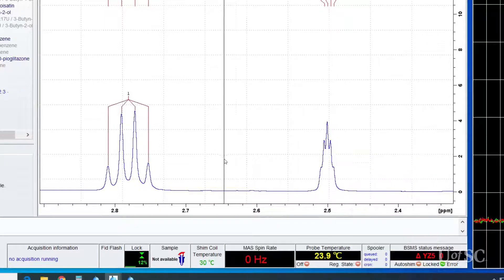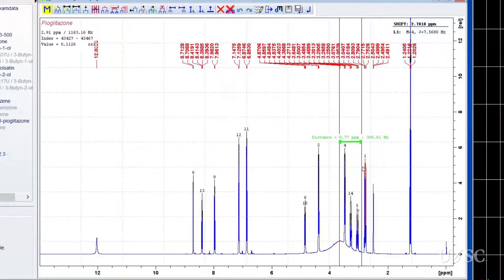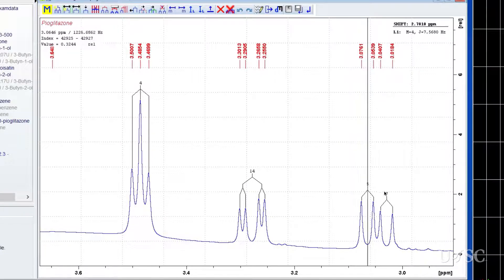The quartet at 2.78 looks correct so we can proceed to the next region. The resonance at 3.05 is incorrectly defined as two separate doublets, not a doublet of doublets. We can correct this by coupling the two.